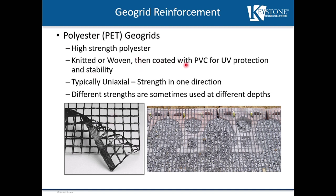Both geogrid types are coated with a PVC coating for UV protection and stability of the grid geometry. They are typically uniaxial, meaning they have strength in one direction, so we want to make sure we put the grid in the proper orientation behind the retaining wall — with the strength direction perpendicular to the face of the wall, rolling the grid out and cutting it in length. There are some biaxial geogrids on the market, meaning strength in both directions, so make sure you know what type of grid you have and its proper orientation. Taller walls might have stronger grids at the bottom and lighter-strength grids at the top.